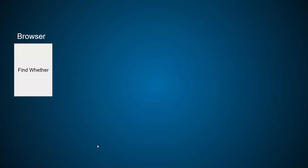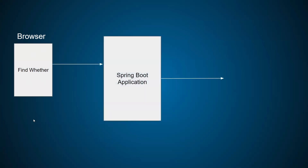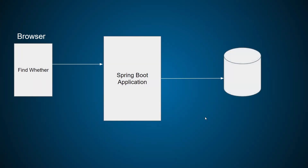Let's take one example. We have a browser, and in the browser we are trying to access a website called 'find weather.' When we try to find the weather, it will call to the server, and the server has a Spring Boot application. Once the Spring Boot application receives a request, it calls to the database, which has all information of the weather. That information will keep changing after one hour to provide the latest weather update to the user. The Spring Boot application hits the database, gets the weather information, and provides it to the end user.